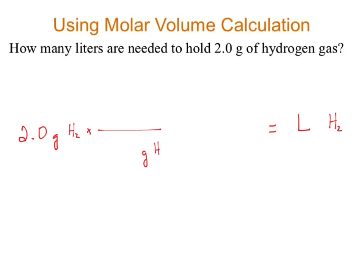Ideally, what shows up in the numerator? What you want for an answer: liters of H₂. But there isn't a gram-to-liter conversion. So that conversion factor is invalid — I'm going to have to convert to something else first.